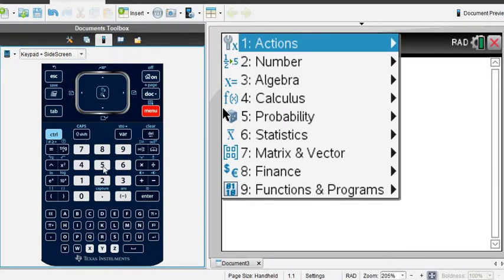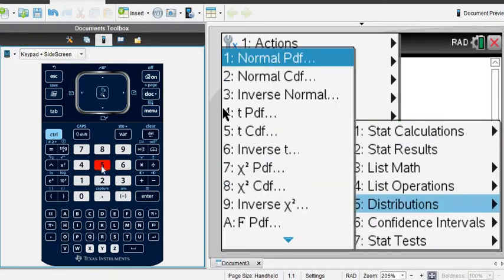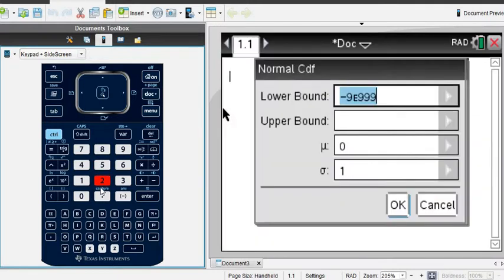I'm going to add a calculator screen. You can either go to option 5 probability or option 6 statistics. Under 6, the distributions is number 5. I'll show you the next time how to do it the other way. Then we choose option 2, the normal CDF.